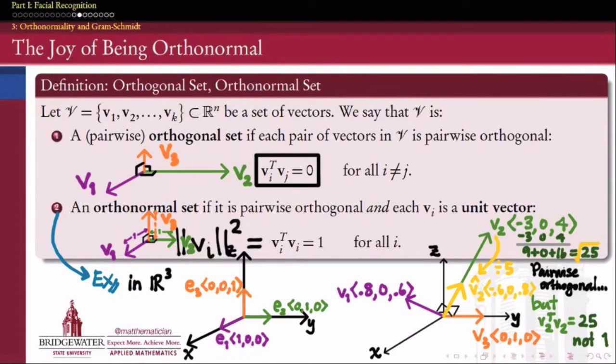In other words, dividing it by its own length or its own norm, if you like. So dividing by the square root of 25, dividing it by 5, gives me a new vector, negative 0.6, 0, 0.8, which is parallel to v2, but is length equal to 1. And that new set now, v1, v2 hat, and v3, forms an orthonormal set.